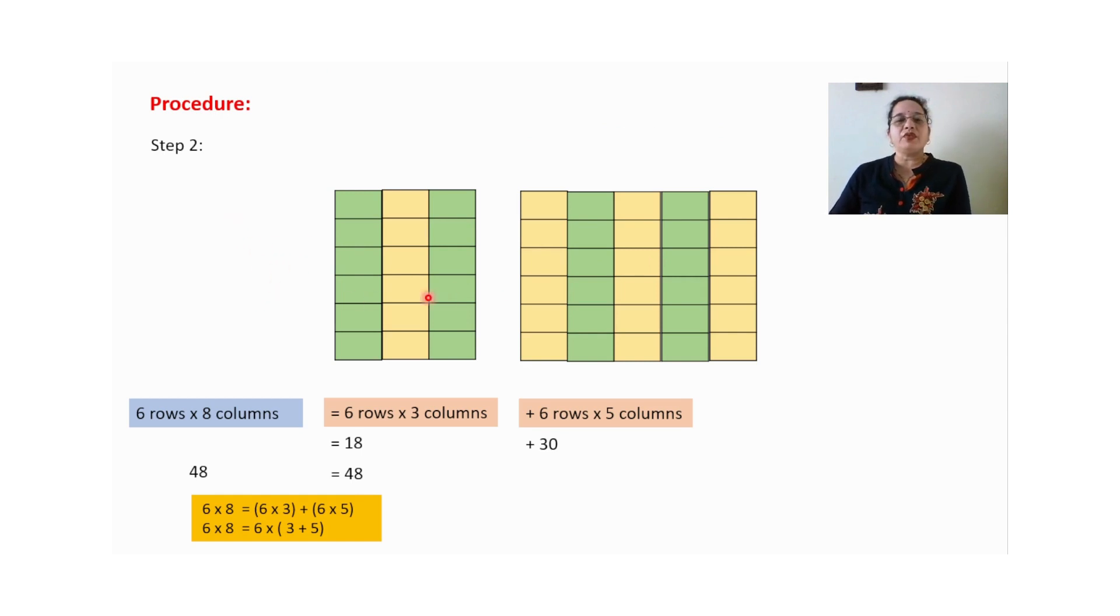The second step what I have done. I have separated these three steps and five steps separately. Now here for this three boxes. We have six rows. Rows are common. Six rows and here are the three columns. One, two and three columns. Six rows into three columns. Six threes are eighteen. Total number of boxes in this set is eighteen. Six rows into five columns. Total number of boxes in this set is thirty.